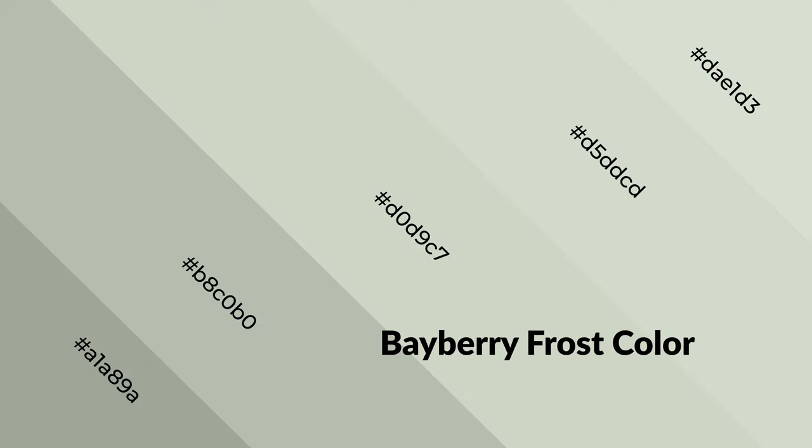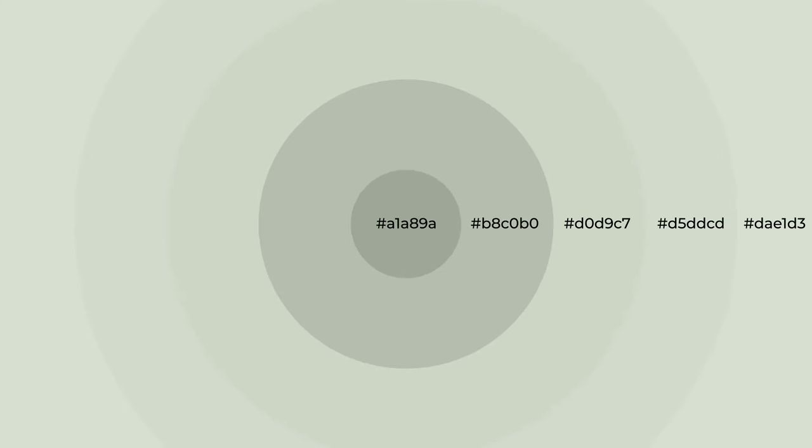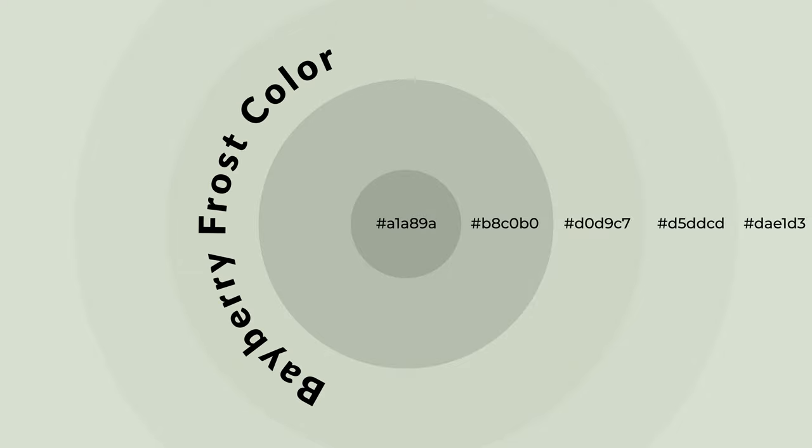Cool colors are like water, ice, sky, grass, soft, and snow. You can see them used in baby products.